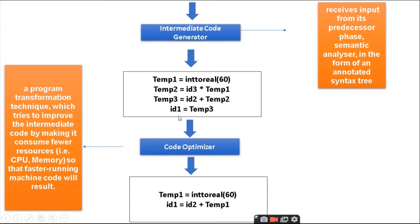After intermediate code generation, it comes through the code optimizer — a program transformation technique that tries to improve the intermediate code by making it consume less memory so that faster running may result. For example, temp1 = inttoreal(60) is optimized, and id1 = id2 + temp1 represents the simplified computation.